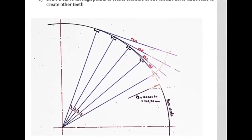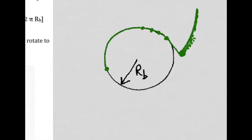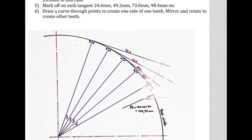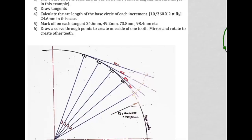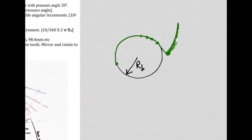We take a piece of paper and draw a circle of 140.95 mm radius — the base circle. Then, using geometry rather than an actual string, we break up a portion of the circle into 10-degree increments. At each of these points on the outside of the circle we construct tangents, representing the piece of string slowly unwinding from the base circle.